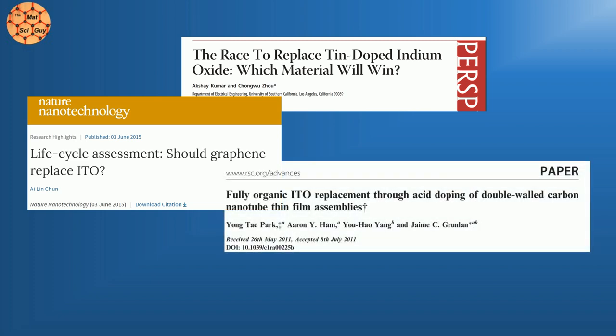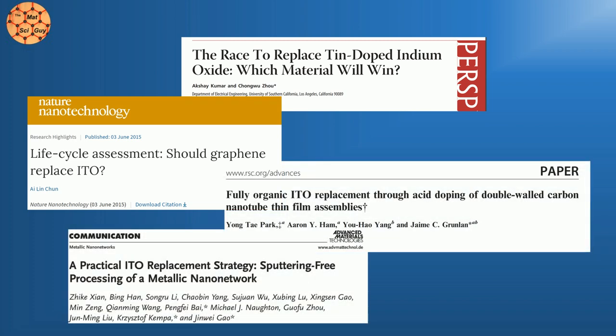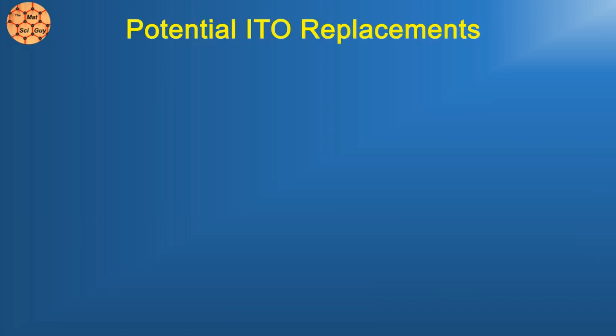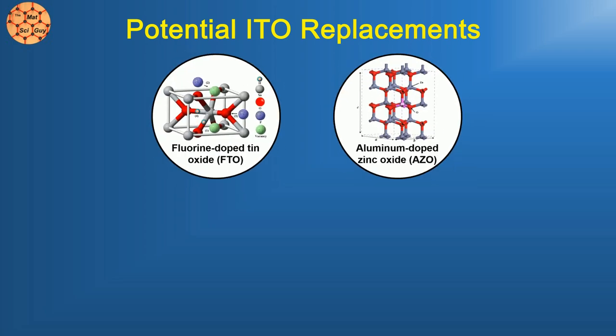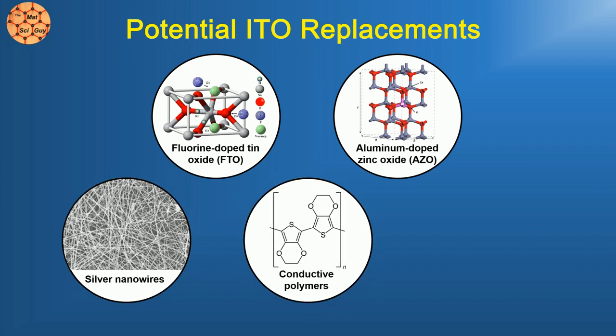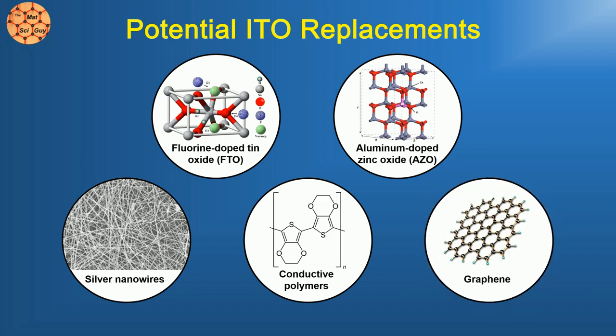For this reason, finding ITO replacements is a hot topic in material science research right now. Other heavily doped oxides like FTO and ASIO are viable candidates in certain applications, while more exotic materials like silver nanowires, conductive organic polymers, or graphene are being heavily researched.